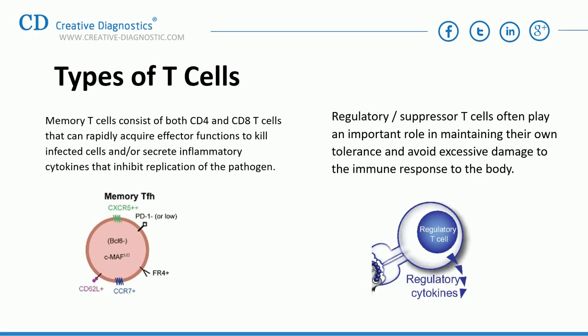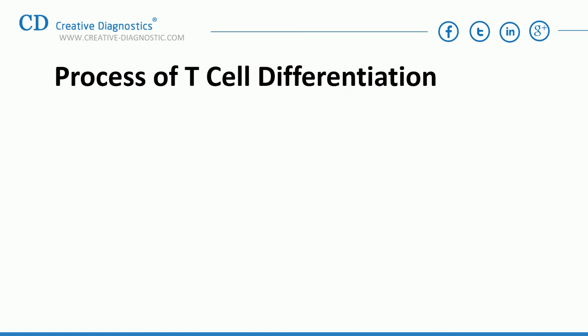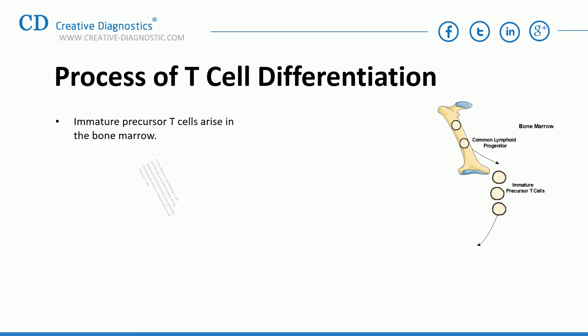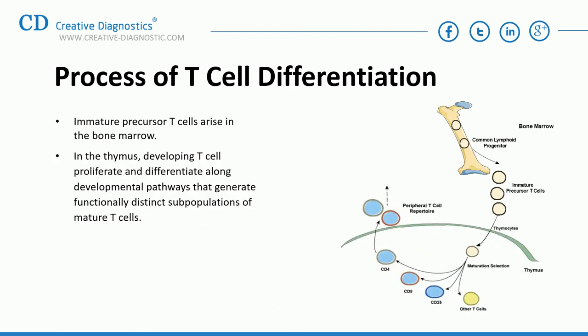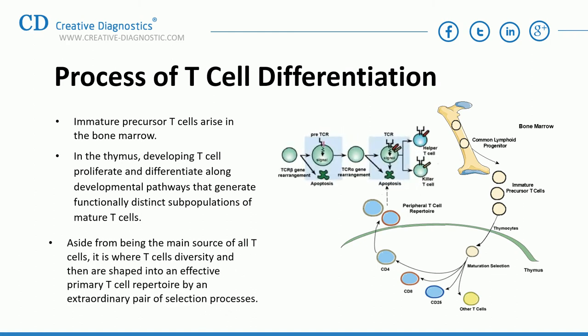Let's look at the process of T-cell differentiation in detail. Immature precursor T-cells arise in the bone marrow. In the thymus, developing T-cells proliferate and differentiate along developmental pathways that generate functionally distinct subpopulations of mature T-cells. The thymus is also where T-cells' diversity is shaped into an effective primary T-cell repertoire through an extraordinary pair of selection processes.